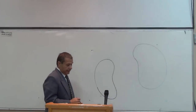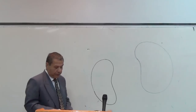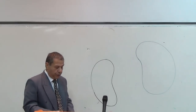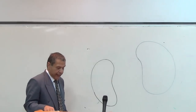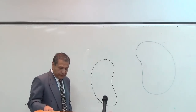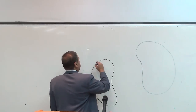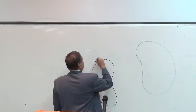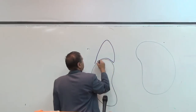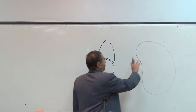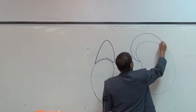The left suprarenal gland and right suprarenal gland lie above the upper pole of the kidney, because they are among the suprarenal glands. The right suprarenal gland is pyramidal in shape, while the left suprarenal gland is crescentic in shape.